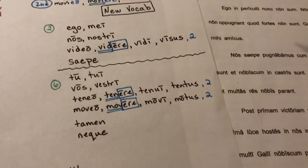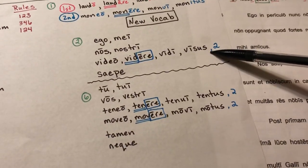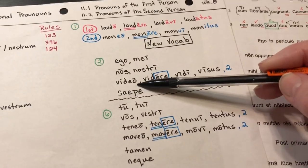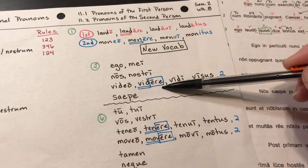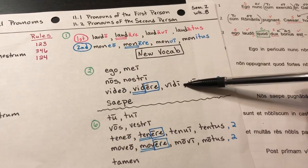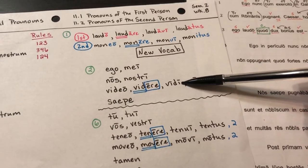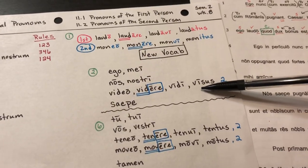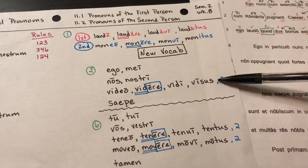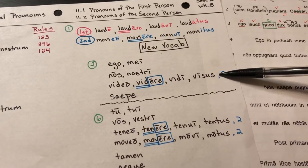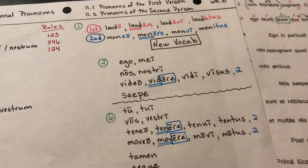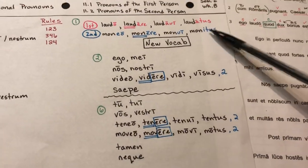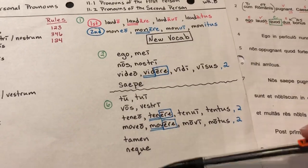Turning to the new vocabulary: anytime we see a verb with four principal parts, we compare it to the standard form and figure out where it differs. Here we have -ao, -aere — same so far — but then we have -ui instead of the expected form, and -us with a slight stem change instead of -itus. I told them when working with flashcards, repeat all four parts together — video, videre, vidi, visus — so you can hear them all in your head.